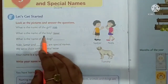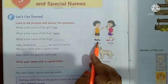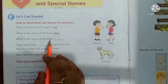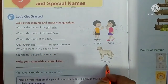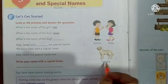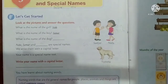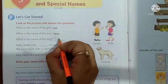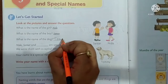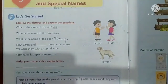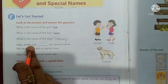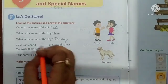What is the name of the boy? Summer. What is the name of the dog? Tommy. T-O-M-M-Y. Tommy. So we have Nida, Summer and Tommy.